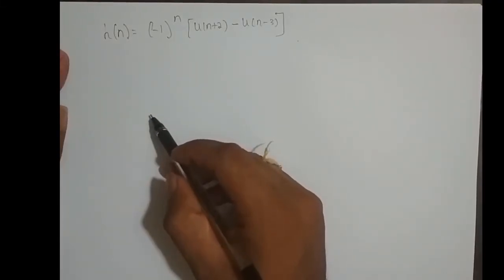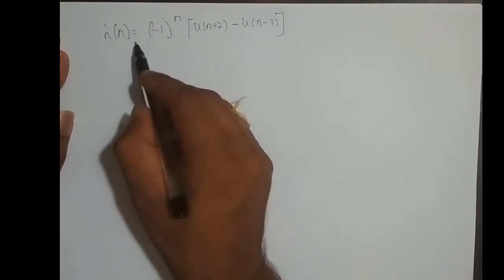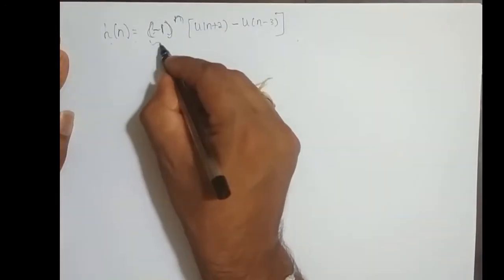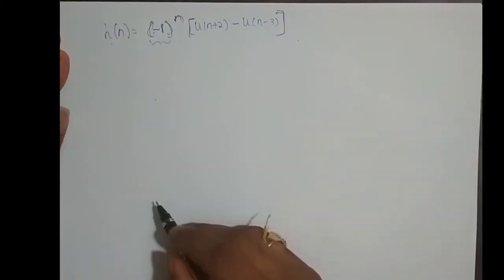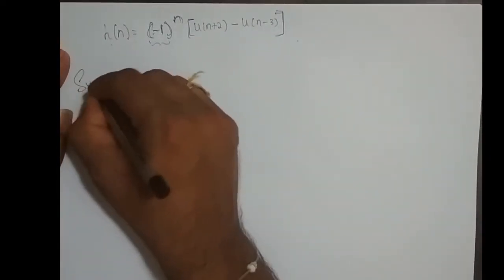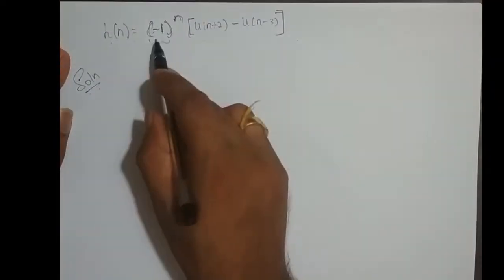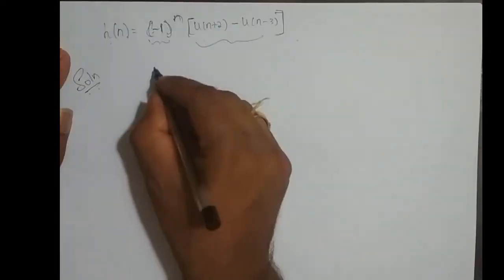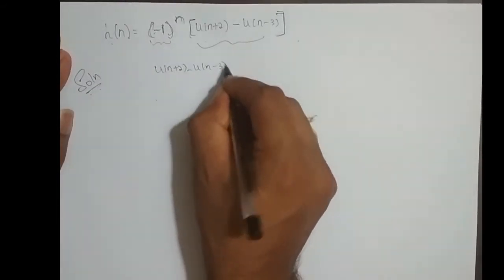We shall take a few more examples on finding step response. Let h of n equal to minus 1 power n times u of n plus 2 minus u of n minus 3. How does this signal look like? This is nothing but a rectangular pulse multiplied with this sequence. We shall plot this first.